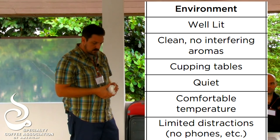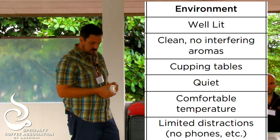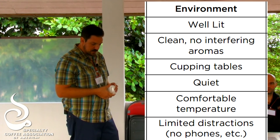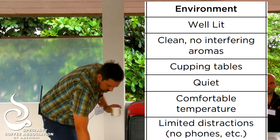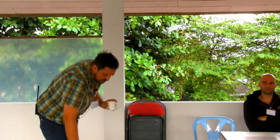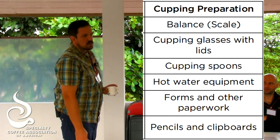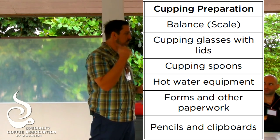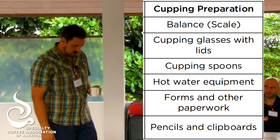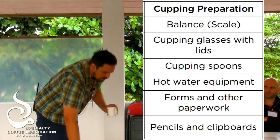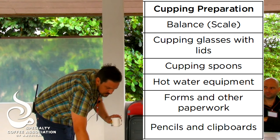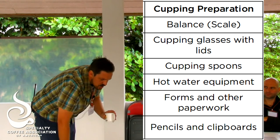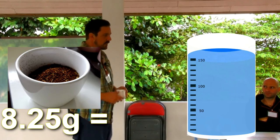The cupping environment should be well-lit with clean cupping tables, quiet, comfortable temperature, and limited distractions — like a testing room. For preparation you need a scale to weigh exactly how much coffee goes in each cup so the ratio is perfect. The optimum ratio is 8.25 grams to 150 milliliters of water.